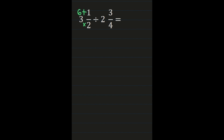7 becomes our numerator and the denominator of 2 remains the same. For 2 and 3 fourths, we follow the same steps: denominator times whole number — 4 times 2 is 8 — then add 8 to the numerator: 8 plus 3 is 11. 11 becomes our new numerator and the denominator of 4 remains the same. I highly recommend that you write this step out so you can see which fraction needs to remain the same, which one you're taking the reciprocal of, and work these steps one at a time.